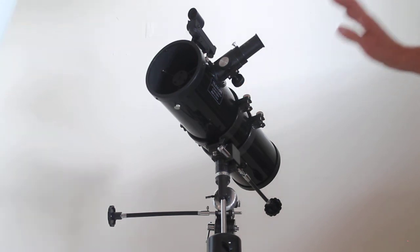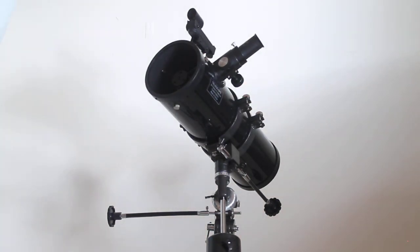So that's it, that's the Skywatcher Skyhawk 114 EQ telescope, model number 10921. Great little starter scope for around 150 pounds, perfect as a gift idea or if you've got a larger telescope yourself and you want a second one for when out on your travels. Thank you very much for watching, and please check out links in the description below.